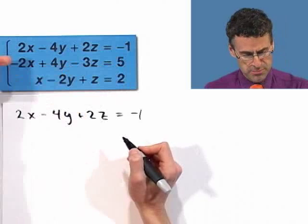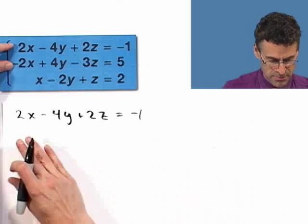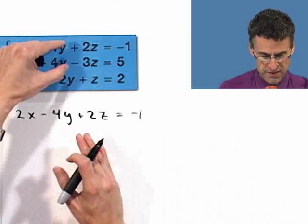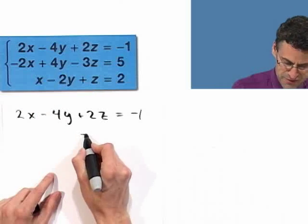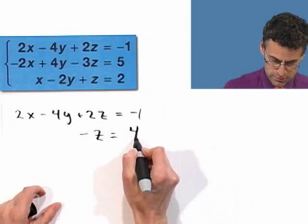So I'll keep the first one there. Write the whole thing out. And now I'm going to replace the second one by the sum of these two. And so if I add these two together, I get zero. I'm not going to write anything there. Add these two together, I get zero. Add these two together, I get negative z. If I add these two together, I get four. Awesome.